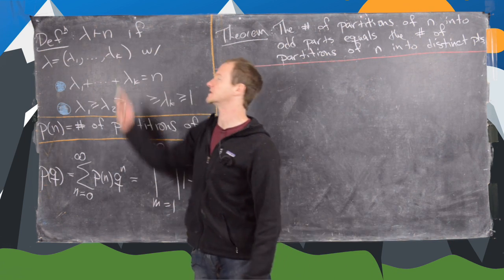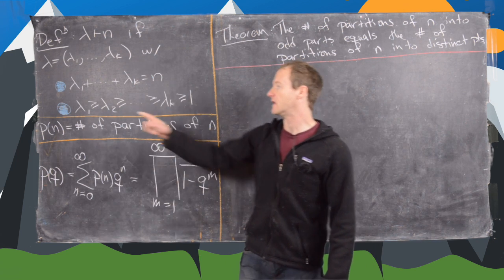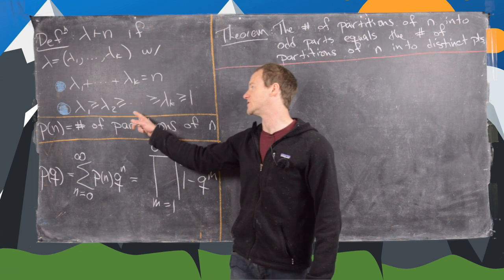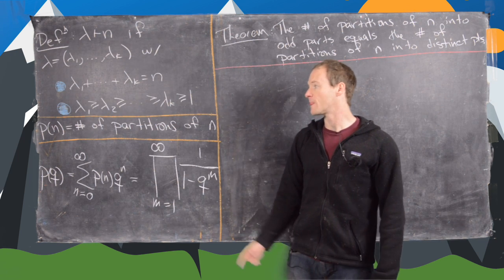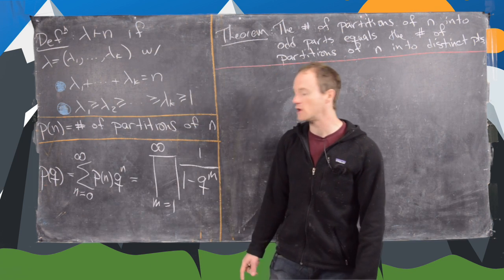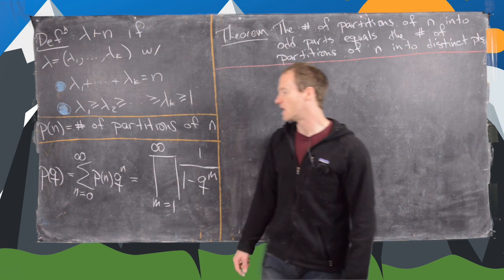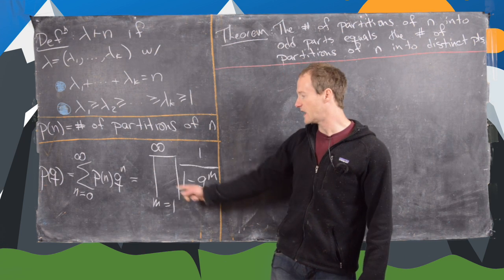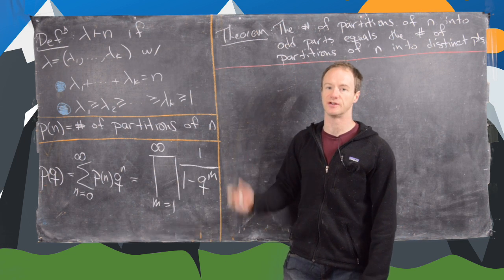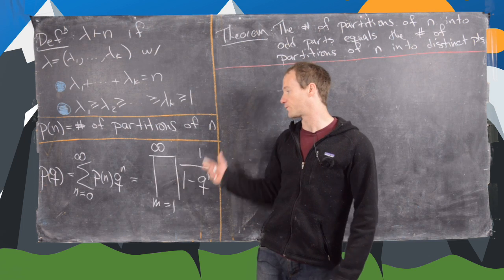Let's recall that lambda is a partition of n if lambda is a k-tuple where all of the parts add up to n, with the non-increasing rule: lambda 1 is greater than or equal to lambda 2, all the way up to lambda k which is greater than or equal to 1. We define p of n to be the number of partitions of n, and for a formal variable q, p of q is the generating function — the sum from n equals 0 to infinity of p(n) q^n — which we showed in part 2 equals the infinite product of 1 over (1 minus q^n). We say p(0) equals 1 just to make this product have a nicer form.